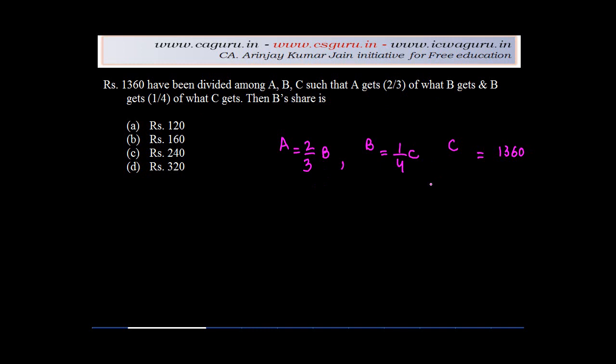And we don't know how much C gets. But what we know is that the sum of this plus this plus this is equal to 1,360.